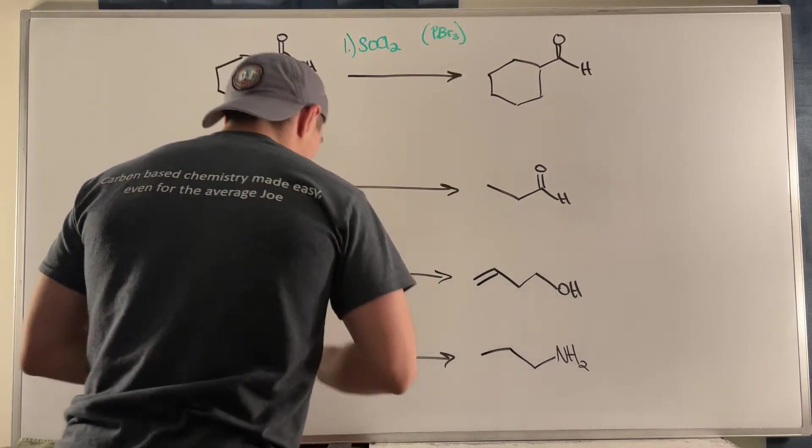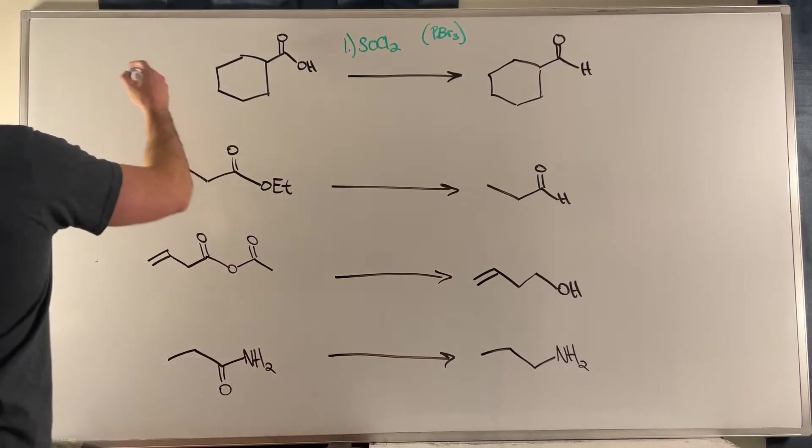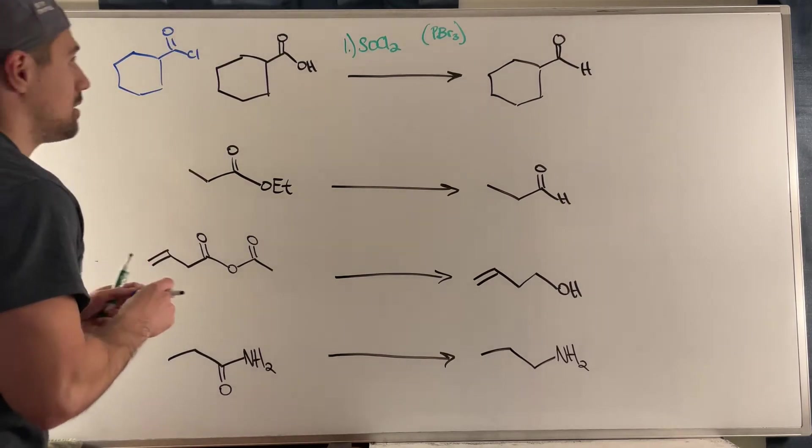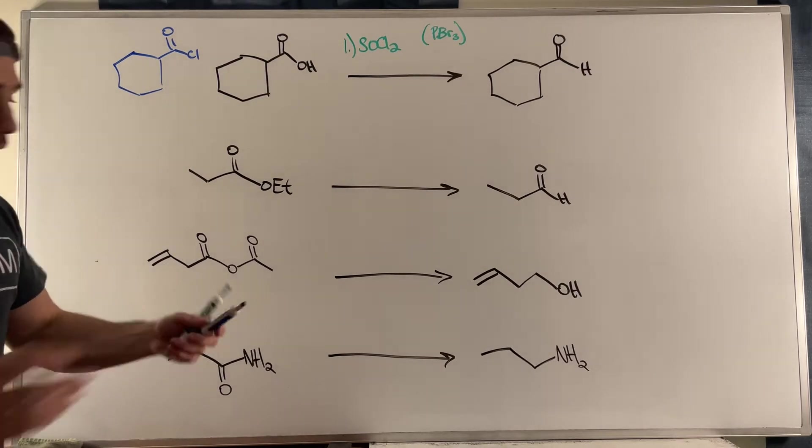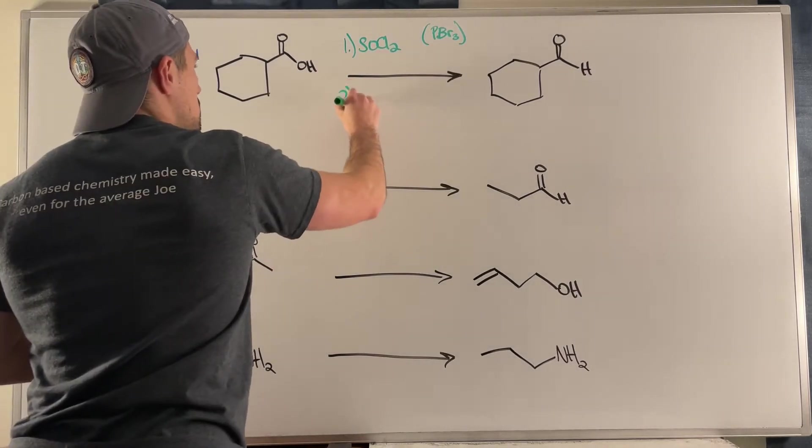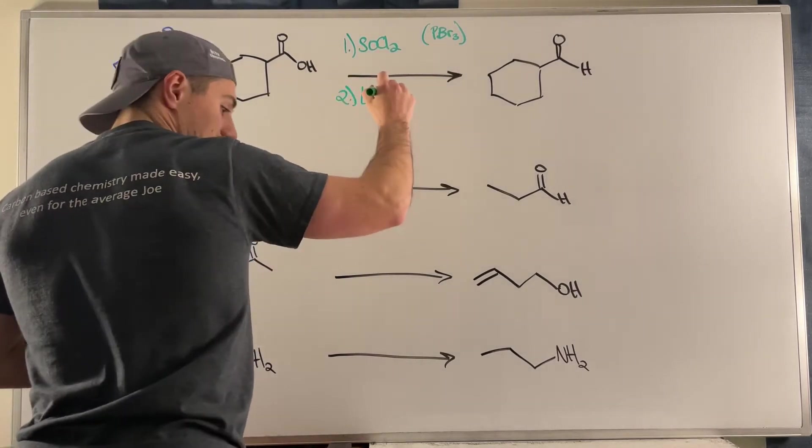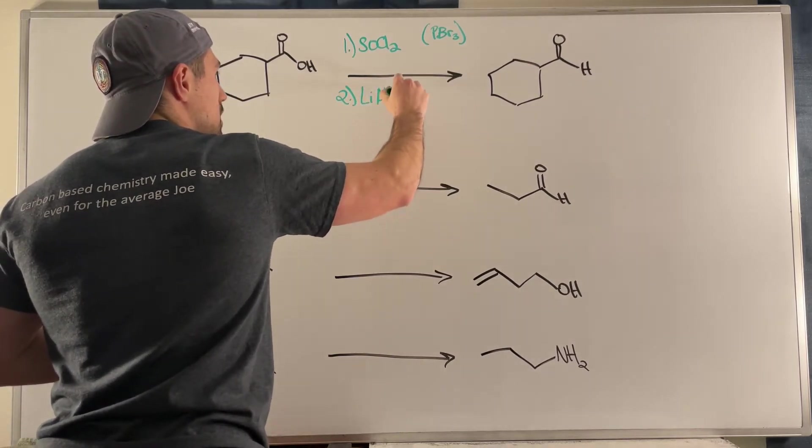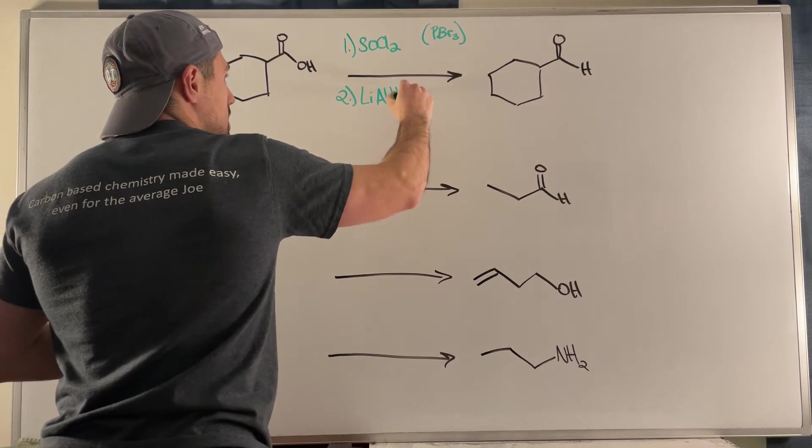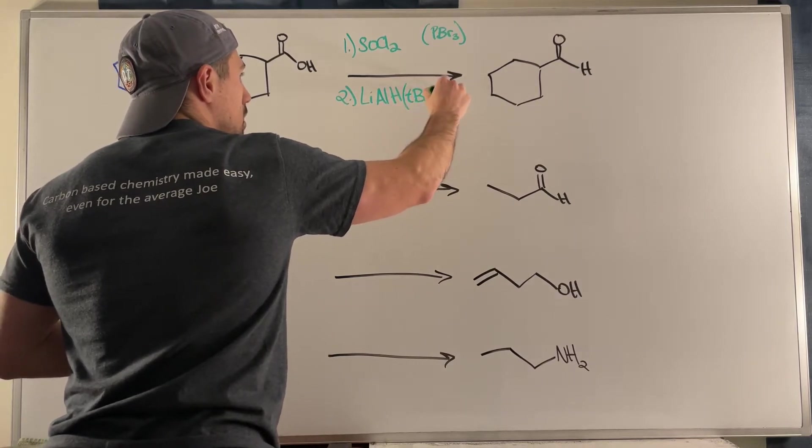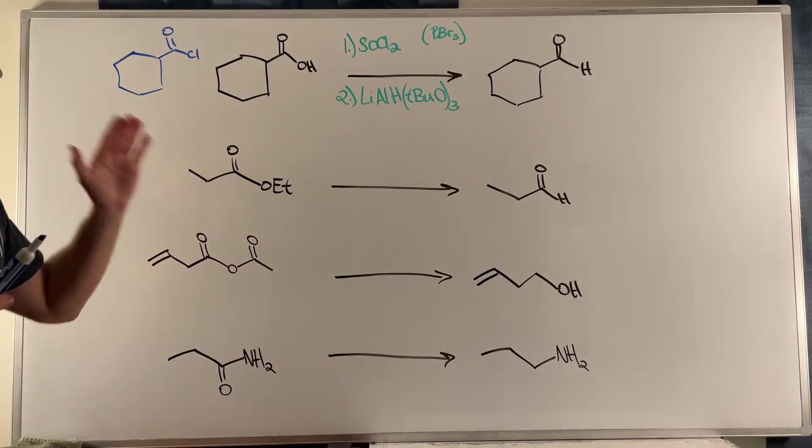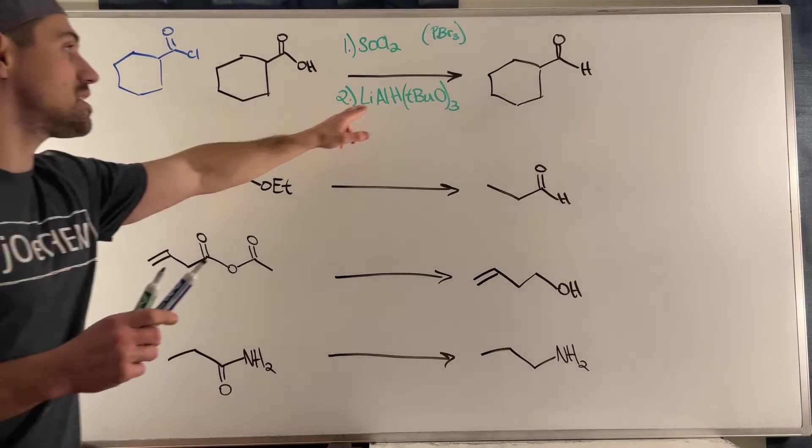But we also have a new option now. What we can do is if we could turn this into an acid halide, either a bromide or a chloride - with a carboxylic acid, if we did a first step of SOCl2, and if you wanted to use bromine you could use PBr3. That first step, what that will do is give you an acid chloride.